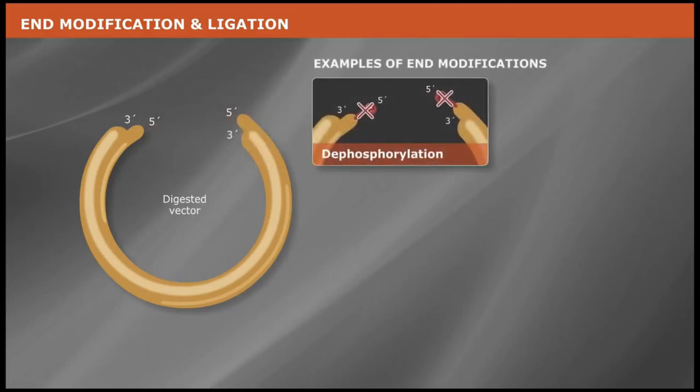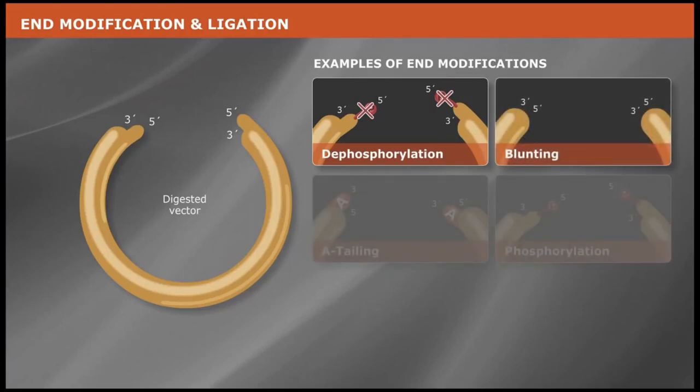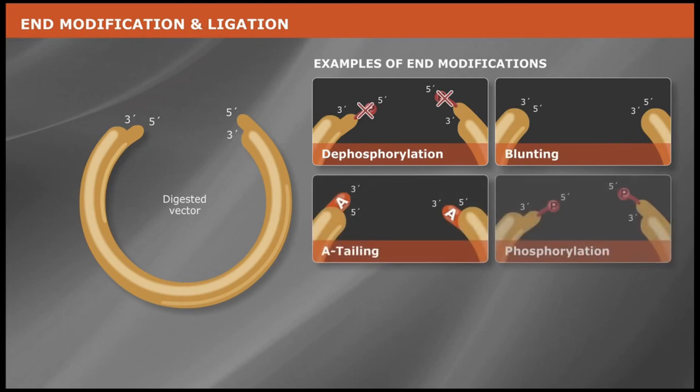Depending on how you generate your vector and insert, other end treatments may be required. These include blunting, a-tailing, and phosphorylation.